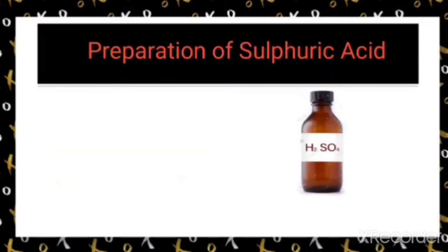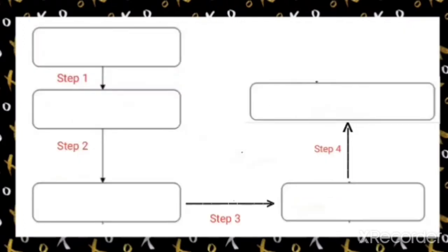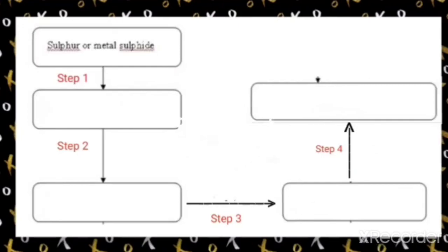Let us discuss the preparation of sulfuric acid. The manufacture of sulfuric acid in industries uses a method called the contact process. Sulfuric acid can be manufactured by the contact process in the following steps. In this process, the raw material used is sulfur or a metal sulfide.